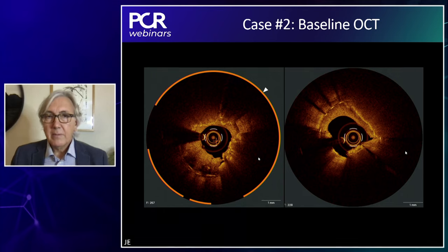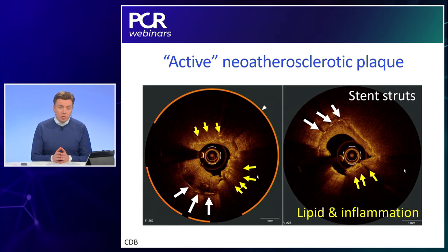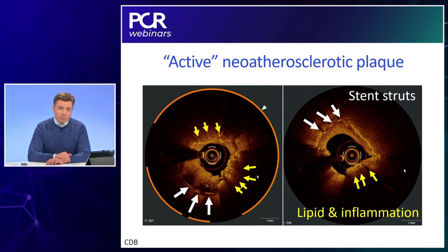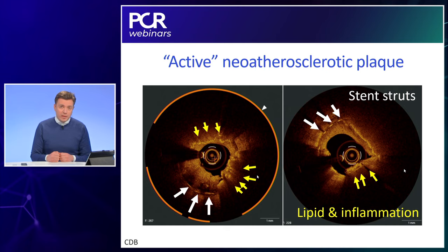To reiterate what Dr. Escanet said: we have an ostial RCA in-stent restenosis with a neo-atherosclerotic plaque that seems biologically active — a lot of lipid and even signs of inflammation. In white you see the stent struts shining on OCT, and there are also other shining parts that are not stent struts — these are the particles referring to macrophages or cholesterol crystals, which attenuate the signal behind them.